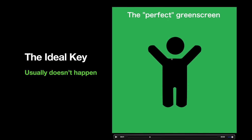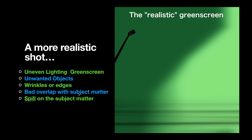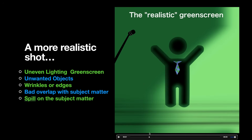Most of the time we have green screens that are not lit perfectly, and you don't have this perfect scenario — it usually takes a lot more work. Here's a more realistic green screen: an unevenly lit screen, lit more on the right side and darker here. We also have problems: a microphone standing in the way on the left side and wrinkles on the bottom of the green screen. These are very standard issues — unwanted objects, bad overlap. Our character also has some spill: that green outline around the character because the bounce light is bright enough to go onto the character, causing problems when keying and semi-transparent edges.